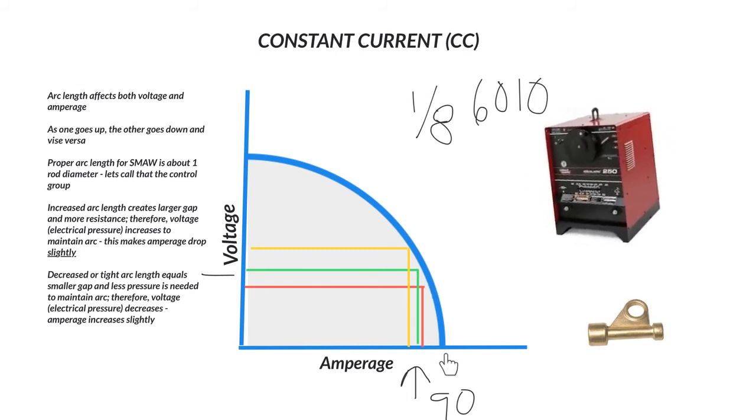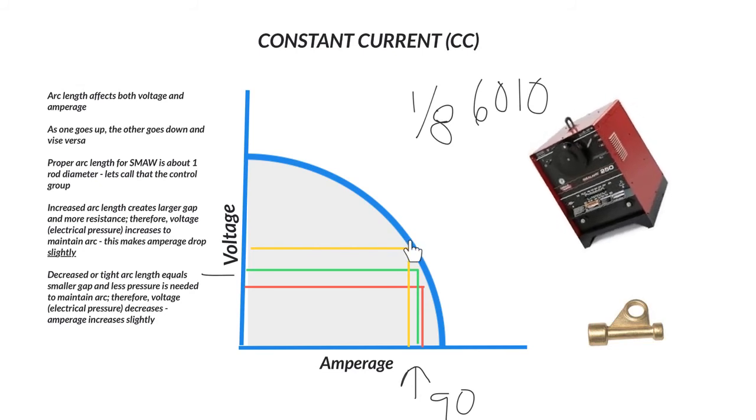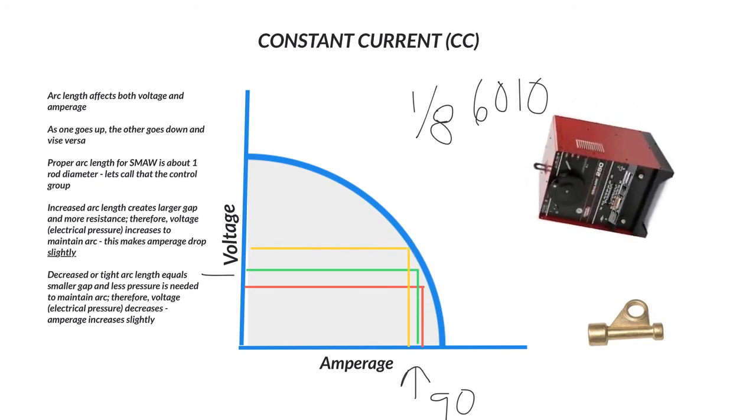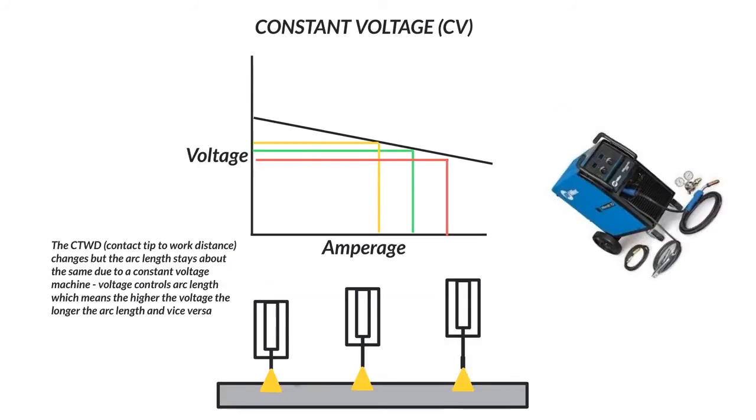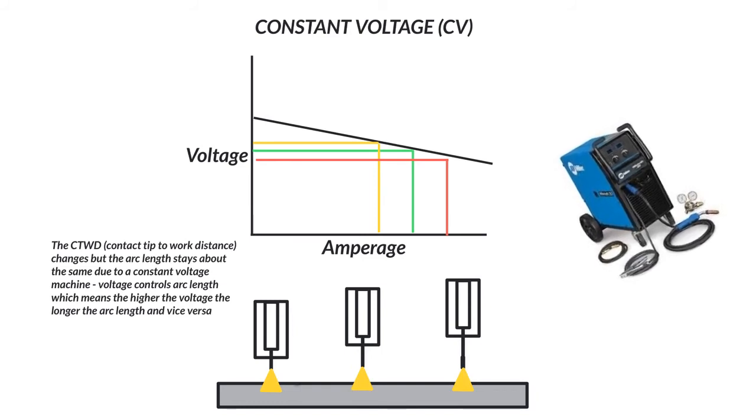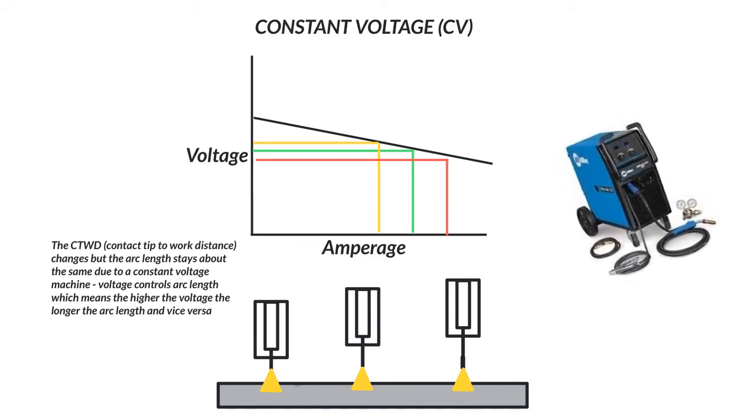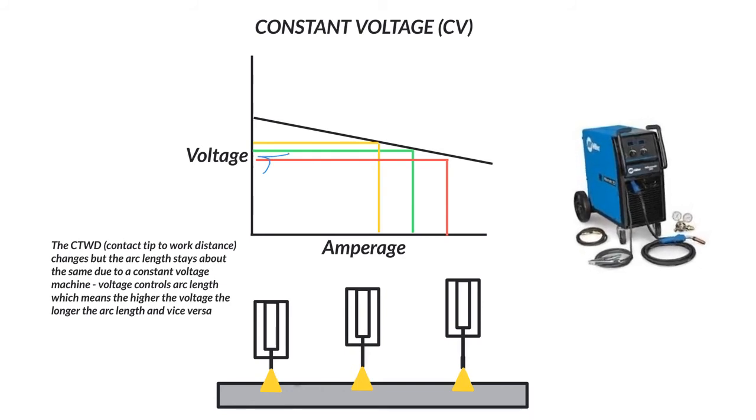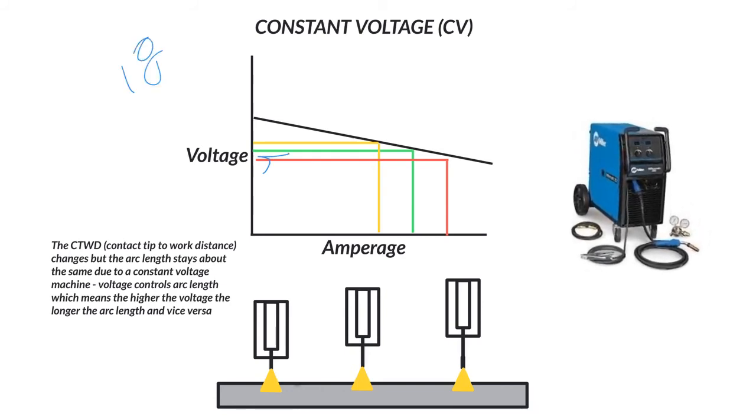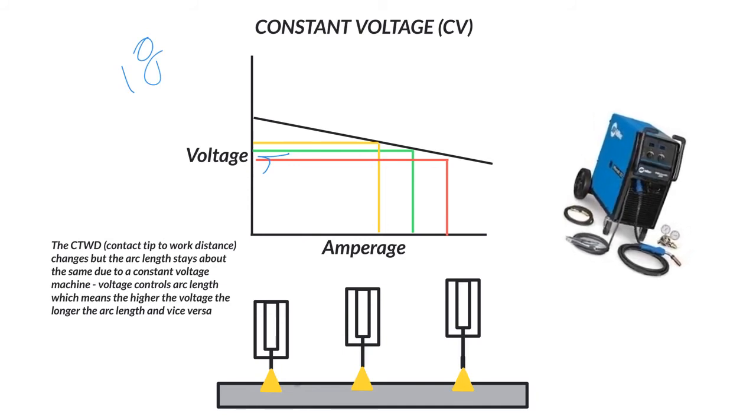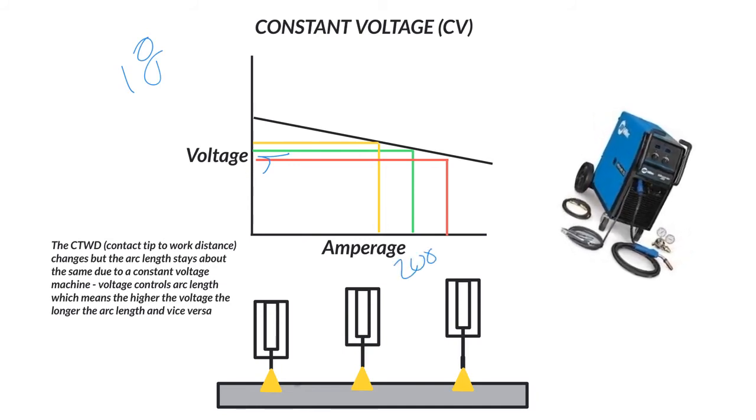So as one goes down, the other goes up. Vice versa, as one goes up, the other goes down. And that is exactly what a constant current power source does. Constant voltage used for MIG flux core machines. And we're going to go ahead and start out saying that we have our control group here, this green one. And we're just going to say it's 18 volts, and whatever the amperage might be, we'll just throw 200 out there.